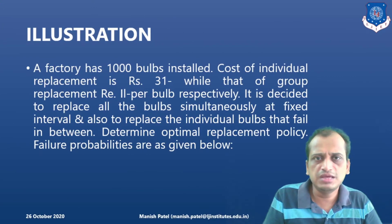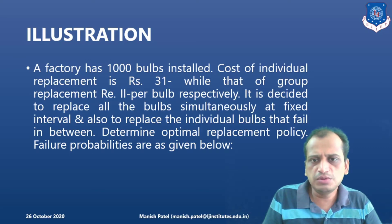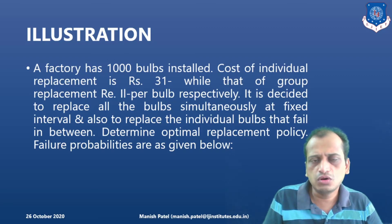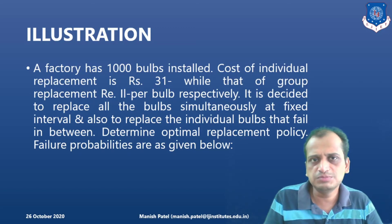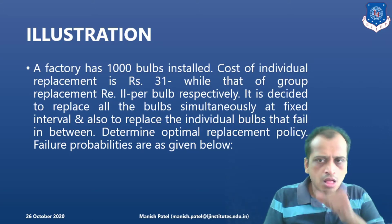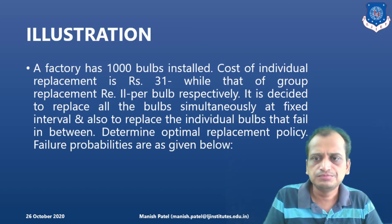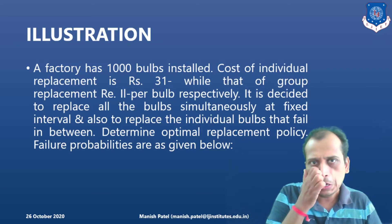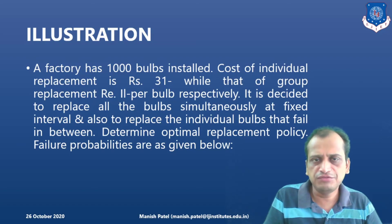Let us look into an example of how we replace items in a group. A factory has 1000 bulbs installed — this is a classic case of group replacement policy. The cost of individual replacement is rupees 31, so if one bulb is found not working, you replace it at a cost of rupees 31. But if you are replacing them in a group, it is going to cost rupees 11 per bulb. Obviously group replacement is beneficial because you are buying in bulk. The company decides to replace all bulbs simultaneously after a certain period of time.